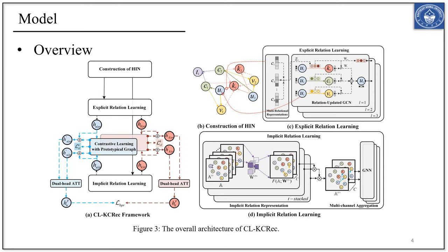Our model has three key components. Firstly, we construct a heterogeneous information network within MOOC platforms. Second, we introduce explicit and implicit relation learning modules. Specifically, we leverage knowledge graph embedding technologies to jointly embed nodes and their explicit relations, and we propose a stacked multi-channel GNN to represent implicit relations in HIN. Finally, we propose contrastive learning with prototypical graphs and dual-hand attention to enhance the representation of nodes with their relational features, ensuring both contribute effectively to knowledge concept recommendations.